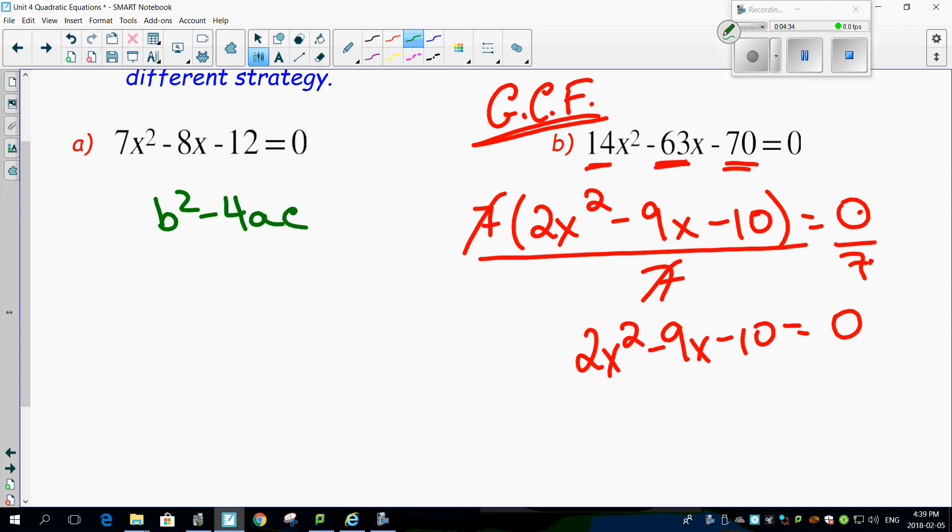And let's see the nature of these roots. B, which is minus 9, squared minus 4 times A, which is 2, times C, which is minus 10. Check this out. 9 squared is going to be 81. 4 times 2 is going to be 8. 8 times 10 is going to be 80. We've got a negative and a negative. So this is going to be plus 80.